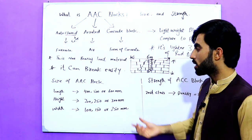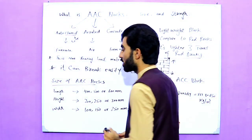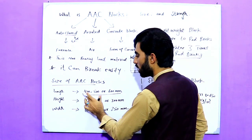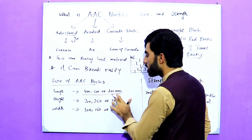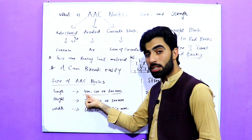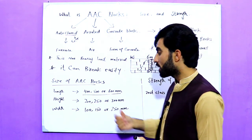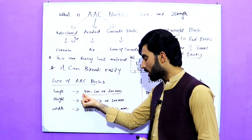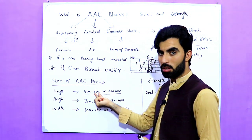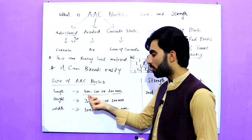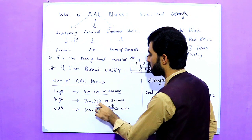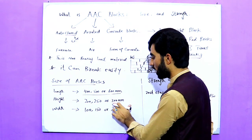Now let's come to the size of AAC blocks. The standard sizes are from IS code. The standard length of an AAC block is 400, 500, or 600 millimeters — these three sizes are available in the market. For height: if the length is 400mm, the height is 200mm; for 500mm length, the height is 250mm; for 600mm length, the height is 300mm — so the height is always half of the length.